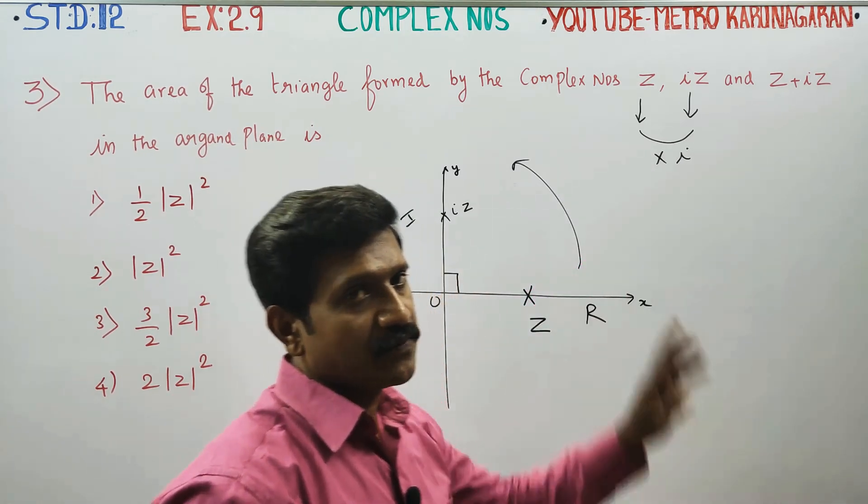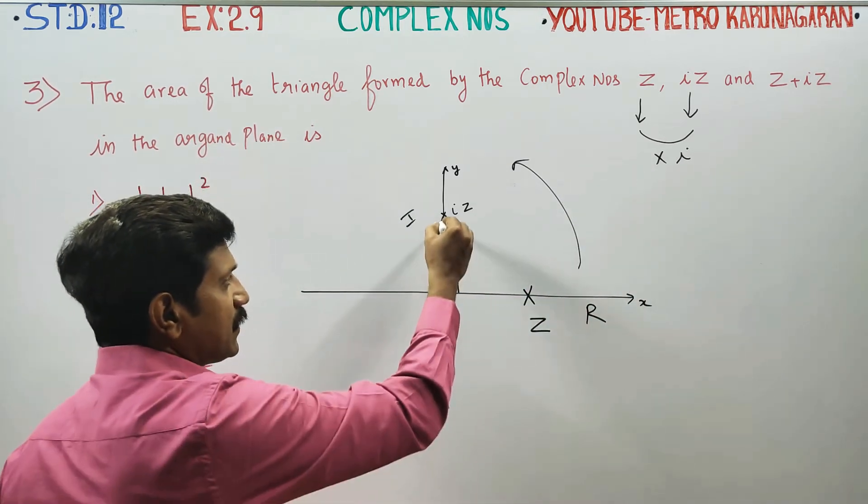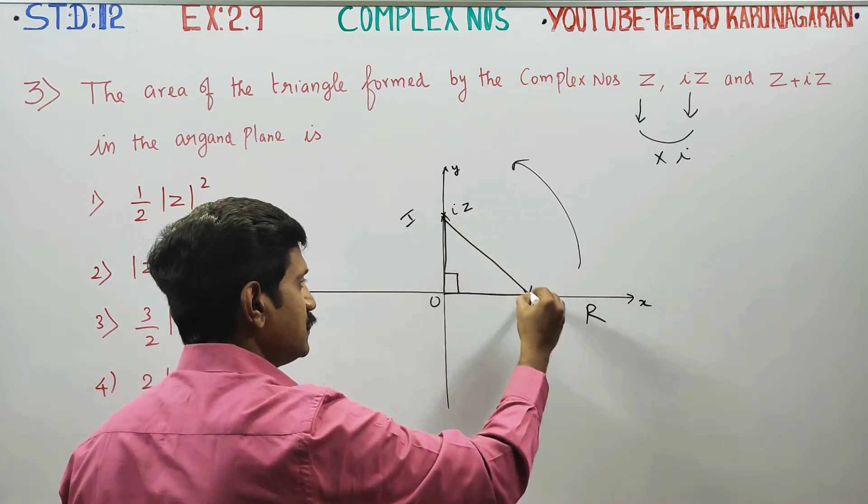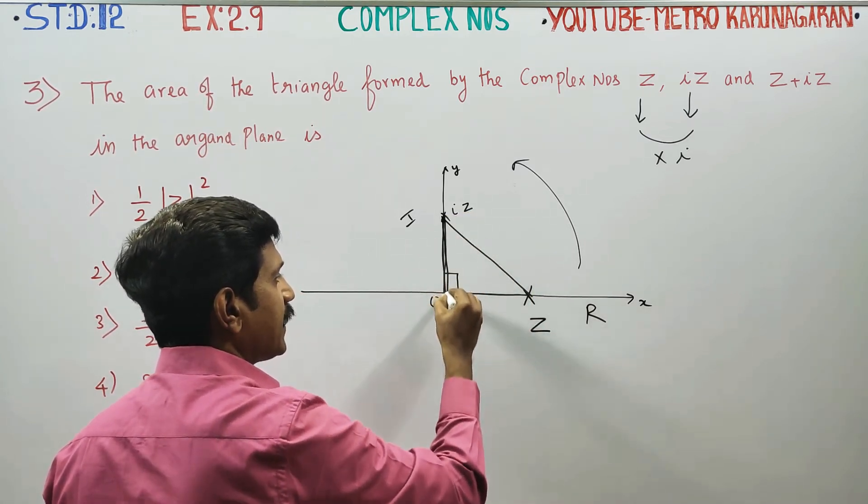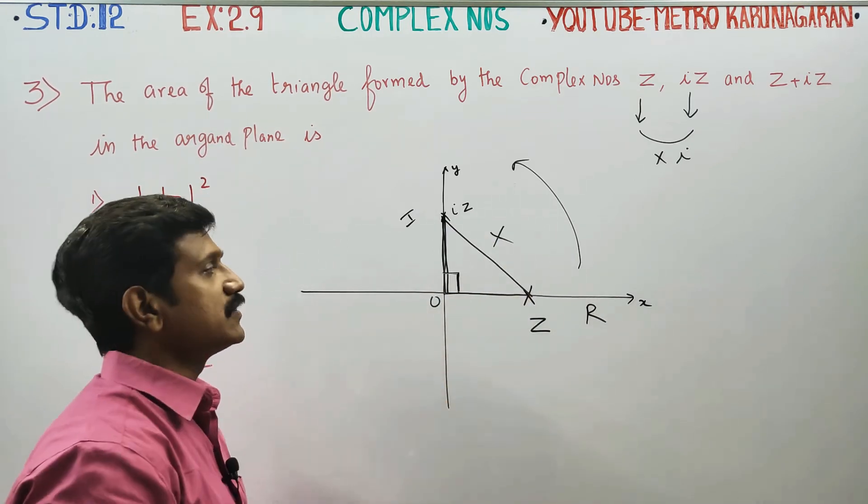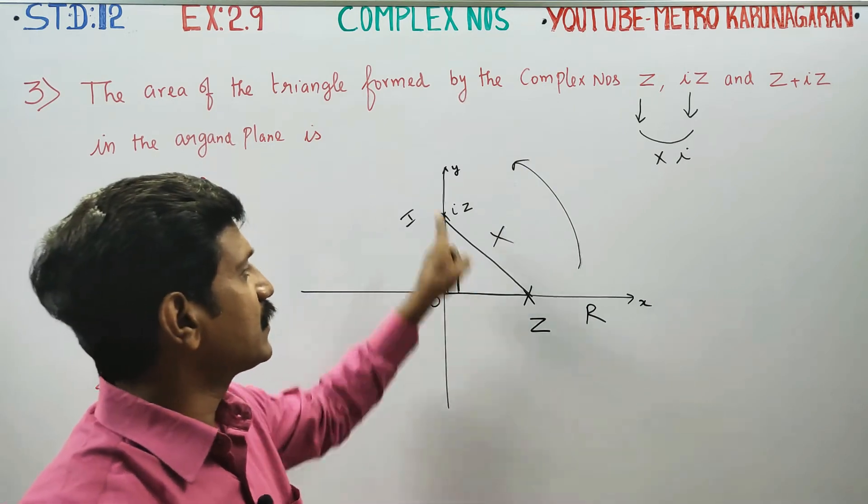Z plus IZ is third complex number. If you look at them you can see triangle form, right angle triangle form. Right angle triangle's third point or third side is Z plus IZ.